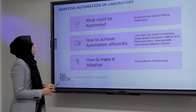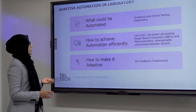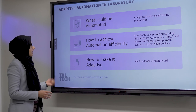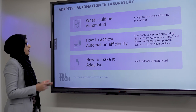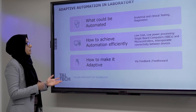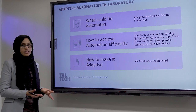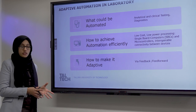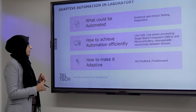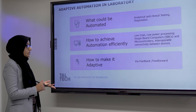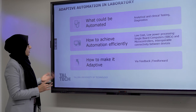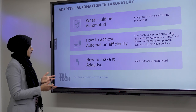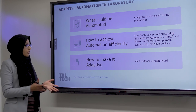Adaptive automation in a laboratory can be seen in three different ways. We have to consider what could be automated, how to achieve automation efficiently, and how to make it adaptive. We are talking about analytical laboratories, clinical testing laboratories, or diagnostic laboratories. Achieving automation efficiently comes with integration, processing, and communication between different devices, while making a system adaptive depends upon feedback or feedforward.